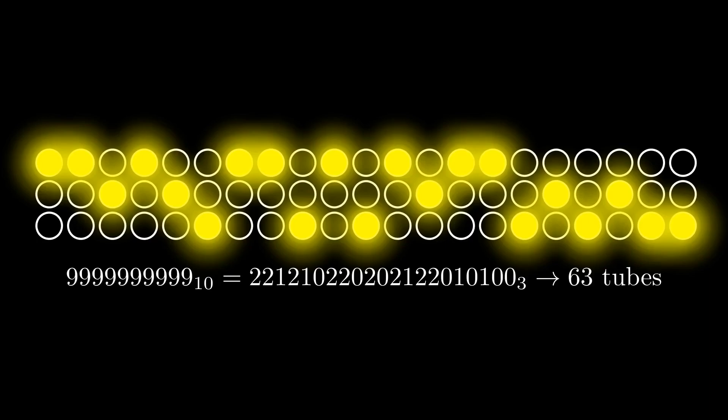In base 4 it takes 68 vacuum tubes. In base 2 it also takes 68 vacuum tubes. In base 3 we only need 63 vacuum tubes to write 10 billion minus 1. Base 3 really is the most efficient. That's why radix economy is important.